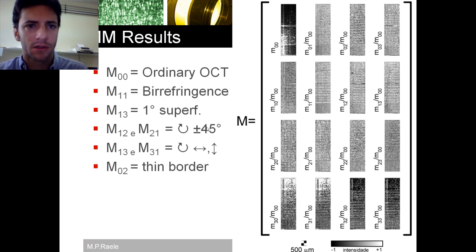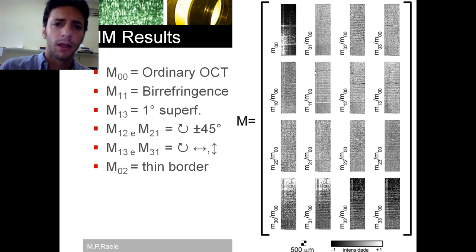And we have some features that I will talk about like this one. It is very clear in this element, the birefringence. You can see like a wave going through inside my sample. This is due to the birefringence.